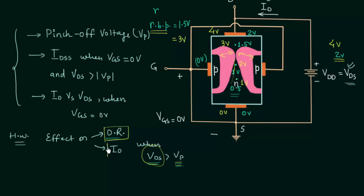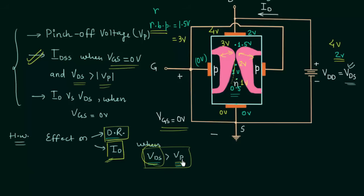Now we will discuss the effect on drain current ID. By definition, IDSS is the drain current ID when VGS is equal to 0V and VDS is greater than the magnitude of VP. Since VDS here is also greater than the pinch-off voltage, the drain current ID equals IDSS. IDSS is the maximum drain current, so even if you increase VDS further, the drain current will not increase beyond IDSS.